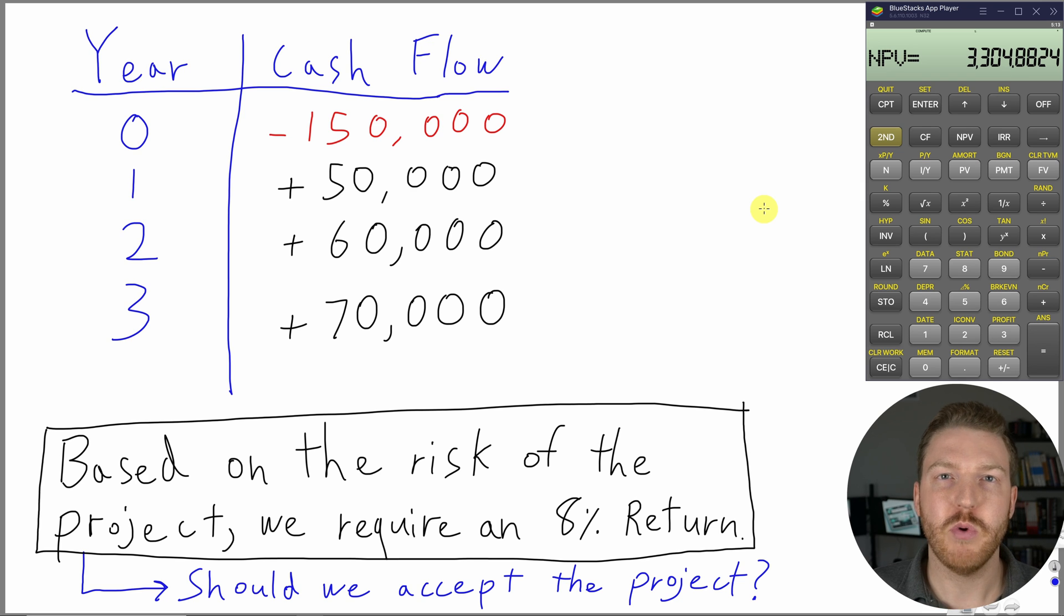Another way we could determine whether or not we want to accept the project is to calculate the internal rate of return or the IRR. The IRR is basically the yield on this investment or the yield that would make the NPV equal to zero. So now let's hit IRR and let's just compute.